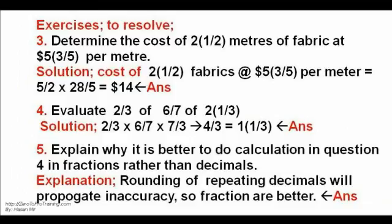Exercises three, four and five: The answers of cost per meter fourteen dollars, multiple ratio is one and one third, and explanation for rounding fractions are better. See respective images.